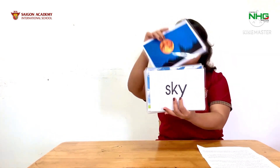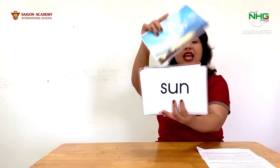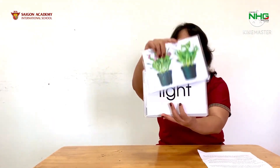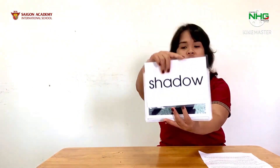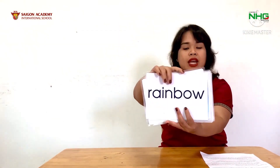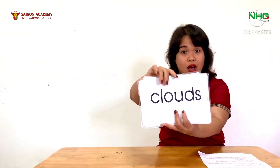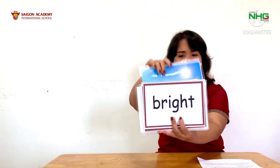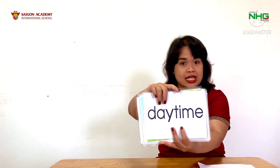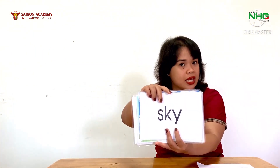We have here: moon, sun, light, plants, shadow, rainbow, day, clouds, night, bright, sunlight, daytime, sky. Let's do it again.